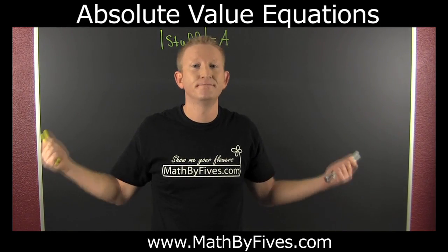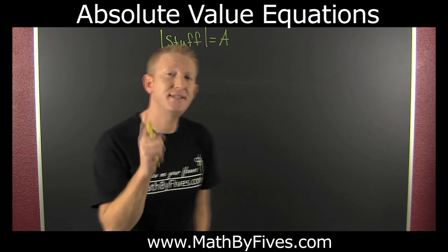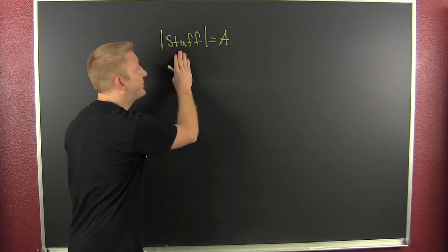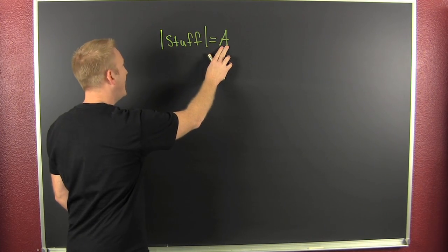Absolute value equations. Here's how we start. Let's take a look at this. If you have the absolute value of some stuff and it's equal to A,